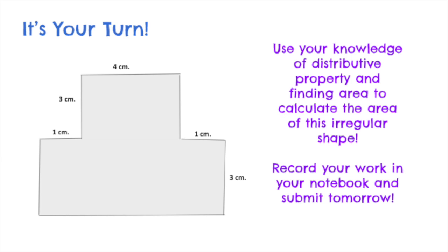Now it's your turn. Here's an irregular shape. Record your calculations in your notebook as you work. Remember these steps. One, divide the figure into two smaller rectangles or squares. Two, label all side lengths. Three, find the area of each smaller figure. Four, add the areas together to find the area of the larger figure.